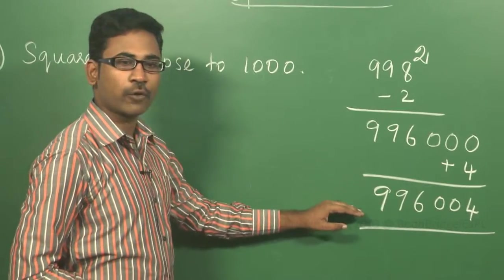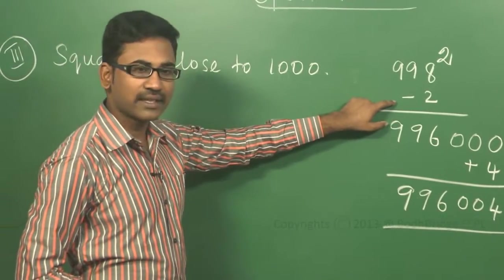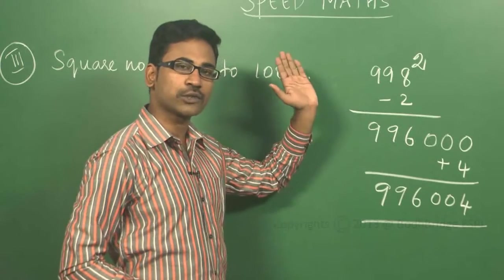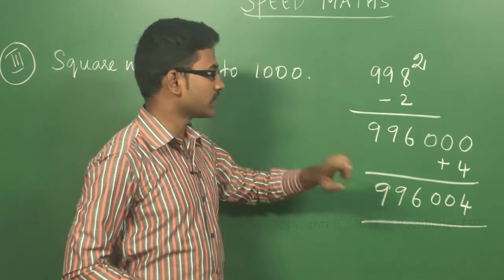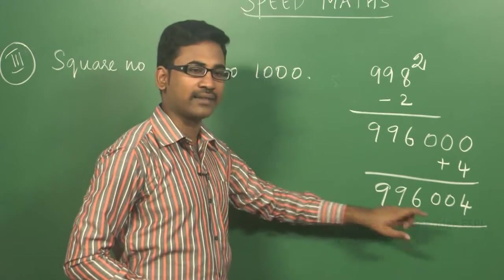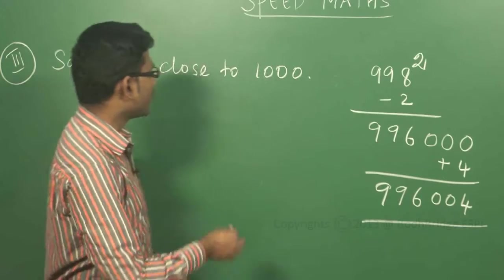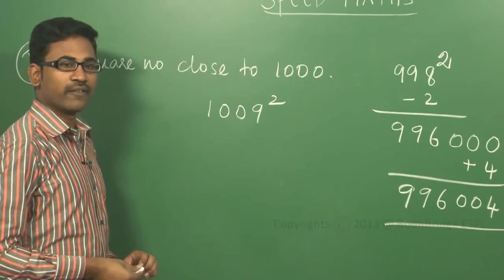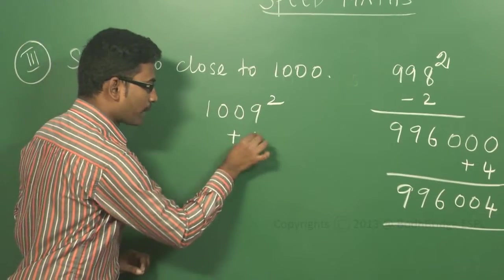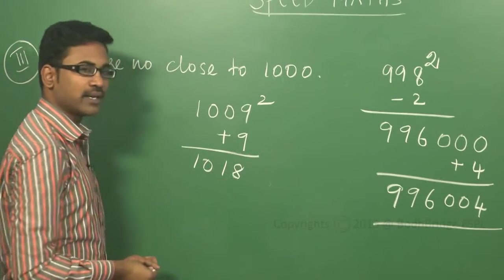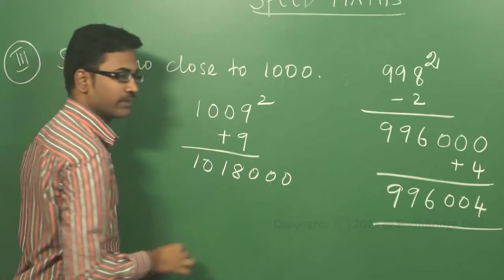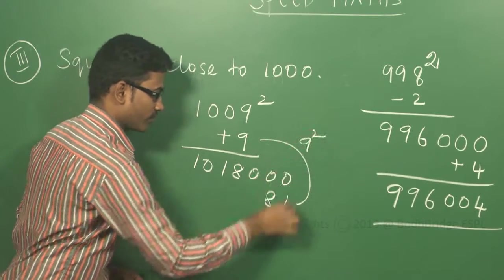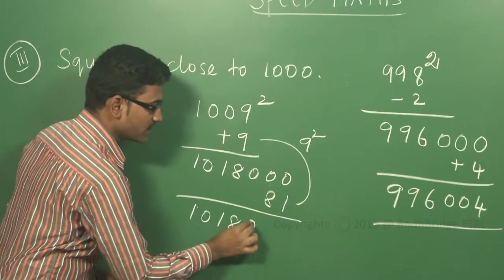The same procedure applies here: check how much the number is less than 1000 — it is minus 2 — and since it is close to 1000, add three zeros. Square the difference and add at the end. If the number is 1009 squared, which is more than 1000, the difference is plus 9. So 1009 plus 9 equals 1018. Add three zeros. 9 squared is 81. The answer is 1018081.